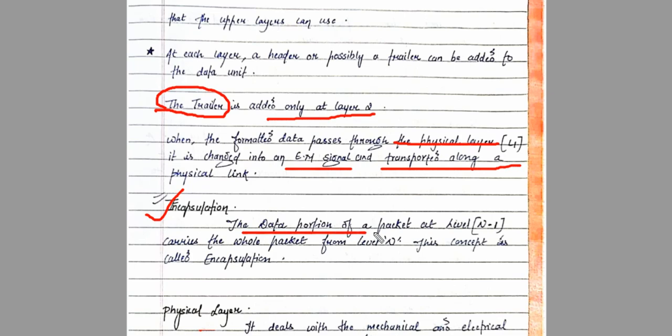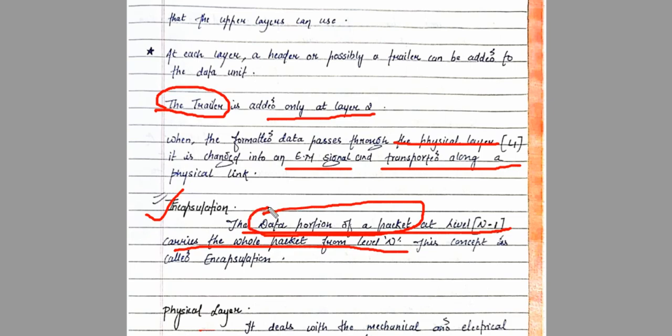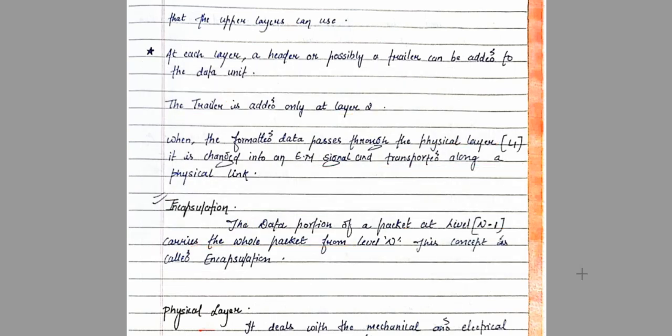The last point to discuss is encapsulation. Encapsulation means the data portion of a packet at level N minus one carries the whole packet from level N. When any layer receives a message, it embeds its own information and passes the whole package to the next layer below — this concept is called encapsulation. In the next lecture, we will start discussing the different layers of the OSI model — Physical, Data Link, and Network — in detail.